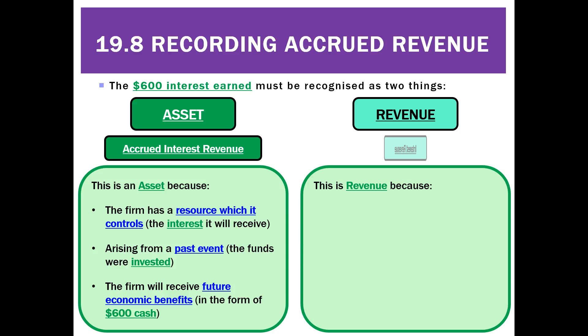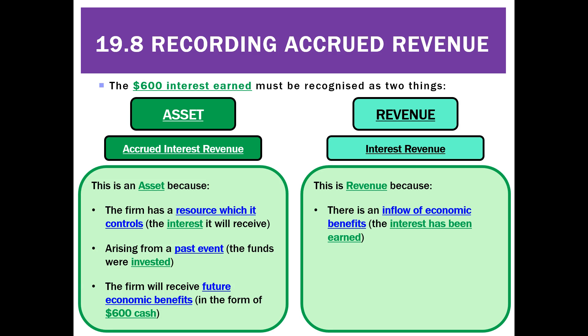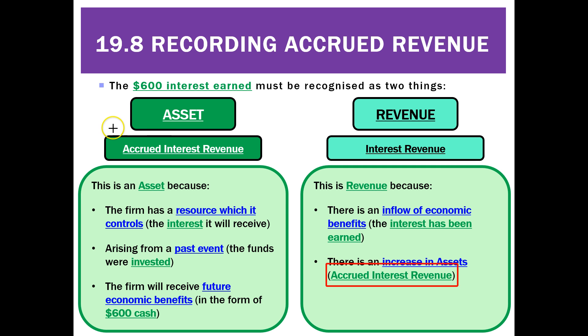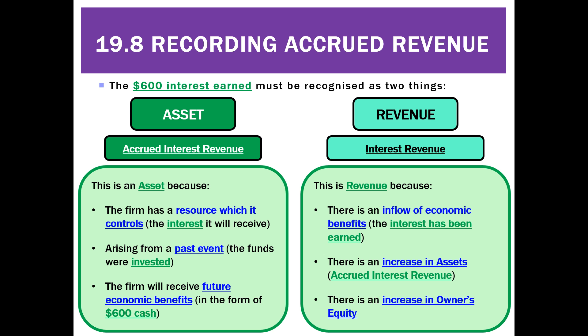But it is also a revenue. Why is it a revenue? It's because there's an inflow of economic benefits — that is the interest we've earned. Even though we haven't received it, we have an inflow of economic benefits because we have earned it and been promised that we're going to get it. Revenue must either increase assets or decrease liabilities. This will increase an asset called accrued interest revenue. And lastly, a revenue must have an overall impact of increasing owner's equity.